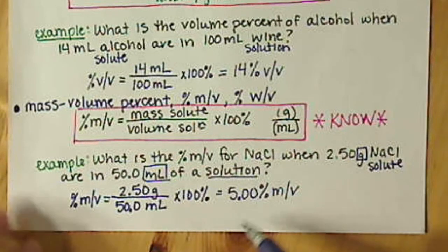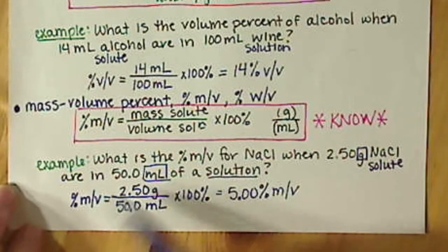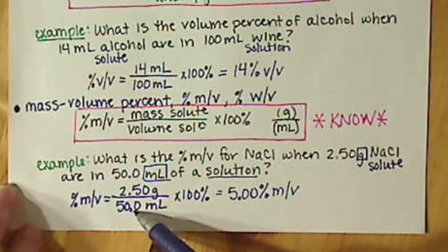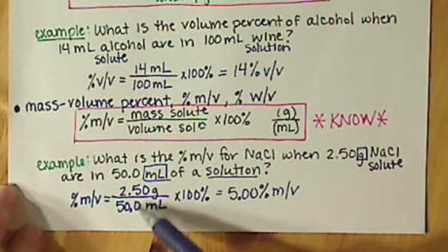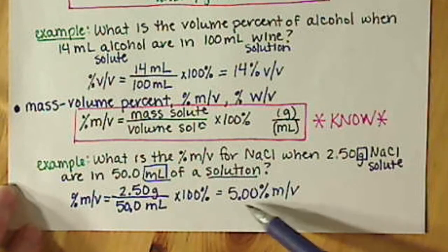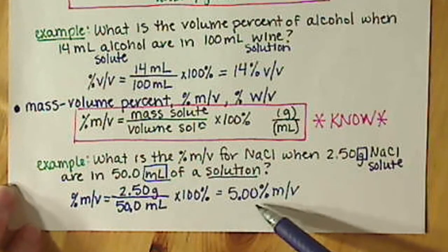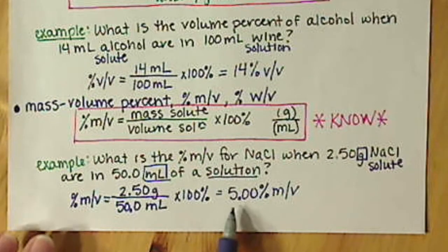I had three significant figures in each of my starting values, which is why I have three sig figs in my answer. The first sig fig is 5, and the two zeros are significant because they come after the decimal after a non-zero digit.